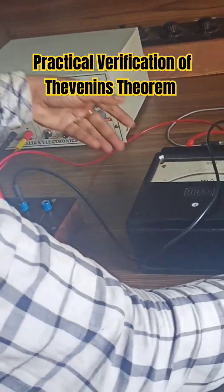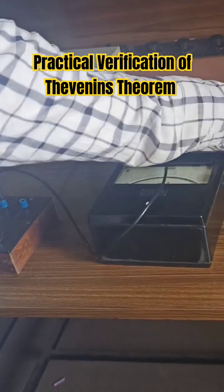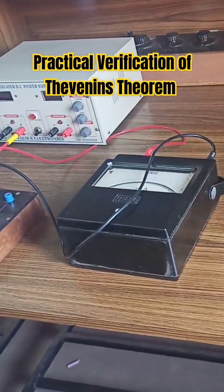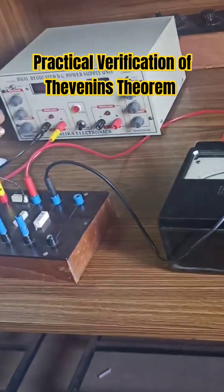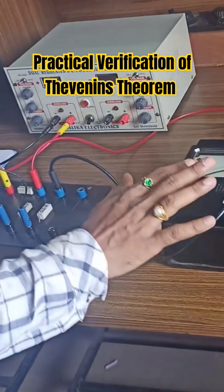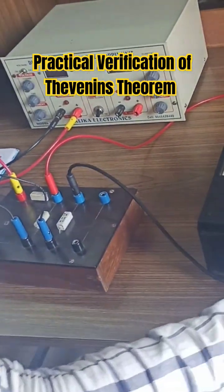This is the circuit diagram without using Thevenin's theorem. Here we have to apply 30 volts and automatically the current will flow in this meter. Let us try to verify.